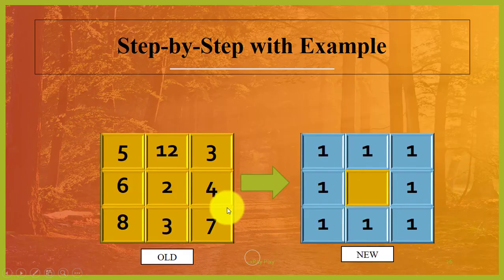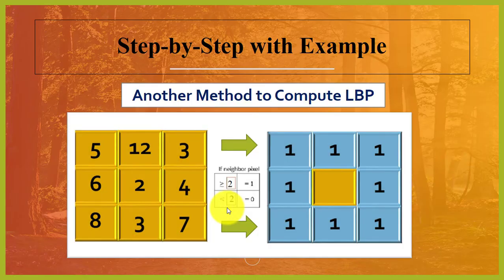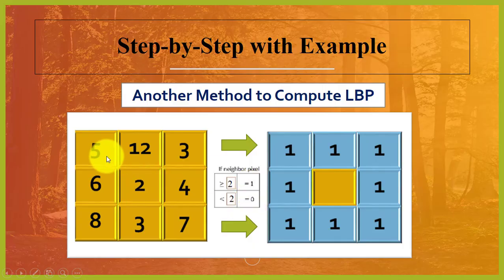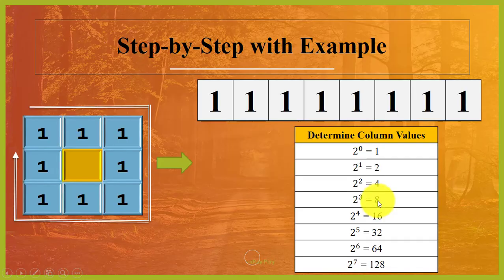We have computed all the values. There is another method to compute the LBP code: simply compare the neighbor pixel values with the center pixel value. If the neighbor pixel value is greater than the center pixel, assign 1, else assign 0. As you can see, all neighbor pixel values are greater than the center pixel, so we assign 1 to all.